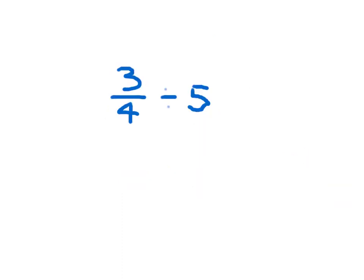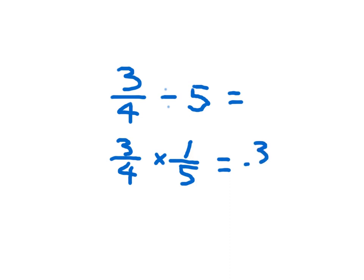Here we have 3 fourths divided by 5. Again, we rewrite it as a multiplication problem, where we're going 3 fourths times the inverse of 5, which is going to be 1 fifth. 3 times 1, which is 3, and 4 times 5, which is 20. And 3 twentieths is already in simplest form.